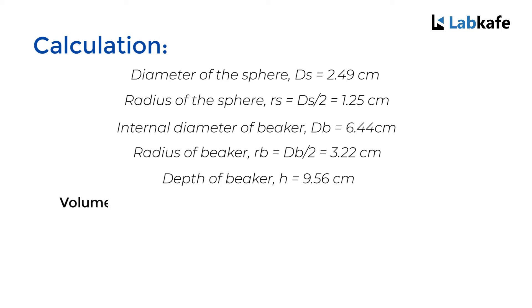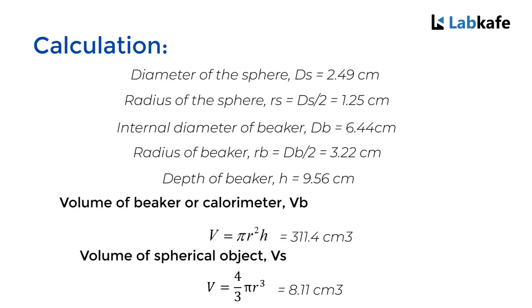Hence, the volume of the beaker is Vb equals π r² h equals 311.4 cm³. And the volume of the spherical object Vs equals 4/3 π r³, which equals 8.11 cm³.